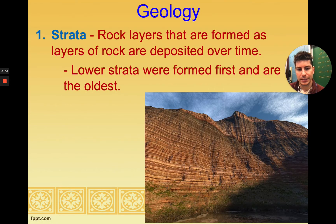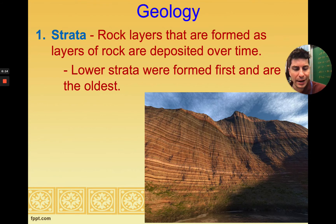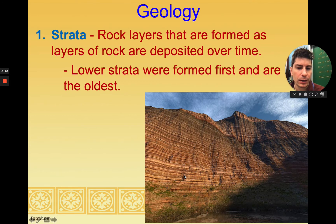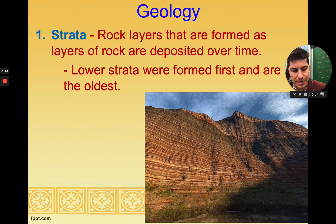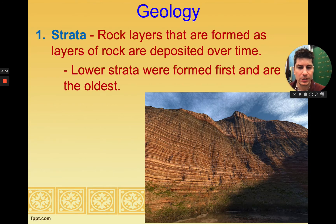As our continents moved, we were able to find a lot of fossils. We find fossils in something called rock strata. When we have a rock formation, you can see there are many different layers. Some rocks are held together by pressure and heat, and some by prokaryotes fusing the rocks together. The key point is that the lower rock is the oldest and the higher rock is the most recently formed.